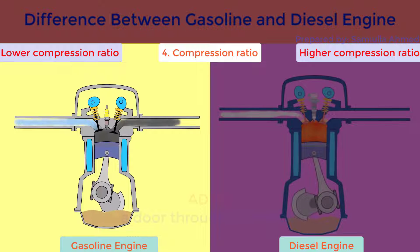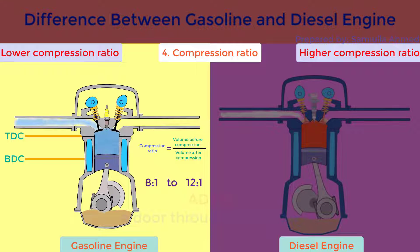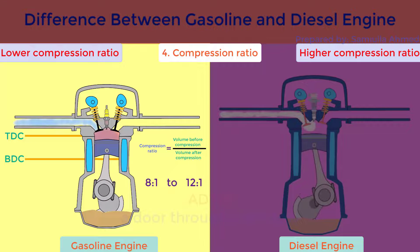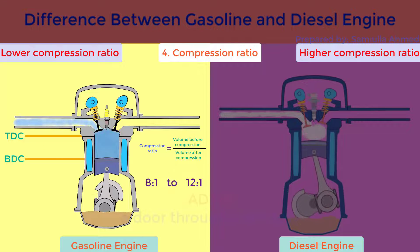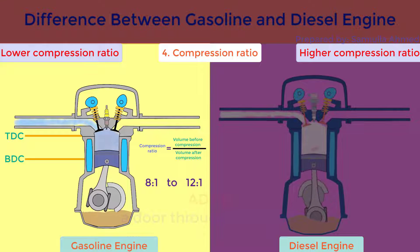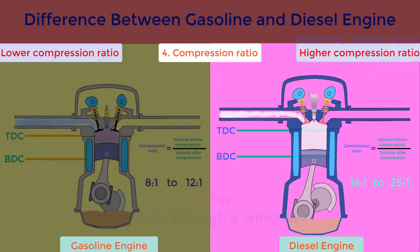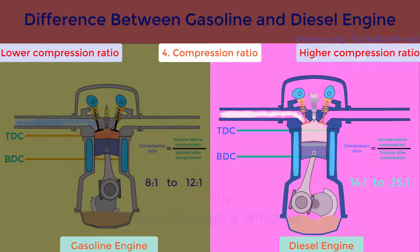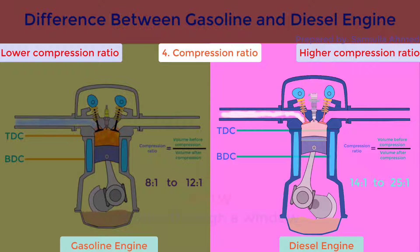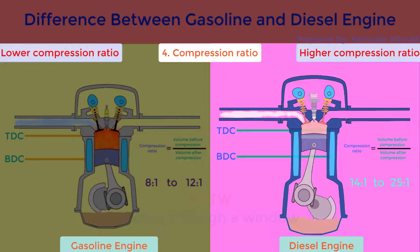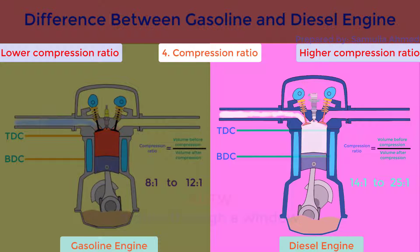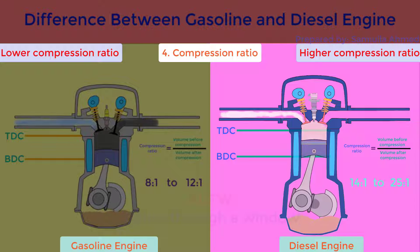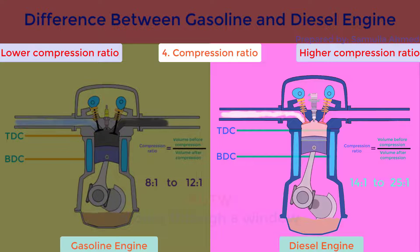Compression ratio. Gasoline engine uses lower compression ratios, that is 8:1 to 12:1, to avoid auto-ignition. Whereas diesel engine uses higher compression ratios, that is 14:1 to 25:1. Since only air is compressed during the compression stroke, diesel engine can have higher compression ratios and there will be no chance of auto-ignition.